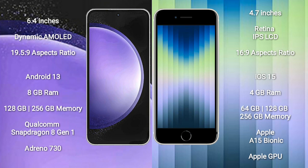iPhone AC comes with 4GB RAM and 64GB, 128GB, or 256GB internal storage, Apple A15 Bionic processor, and Apple GPU.